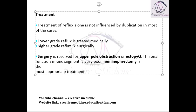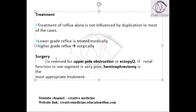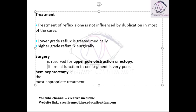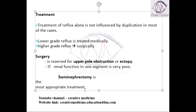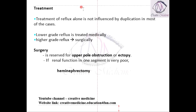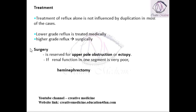Surgery is mainly reserved for cases of upper pole obstruction or if ectopy is present. If the renal function of one segment is very poor, then heminephrectomy can be done. This surgery is done only for upper pole obstruction or ectopic ureter, and only if there is high grade reflux; otherwise, surgery is not required.